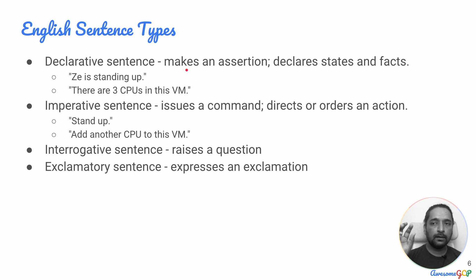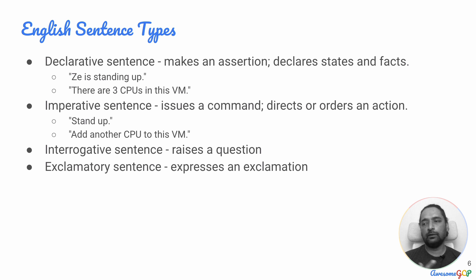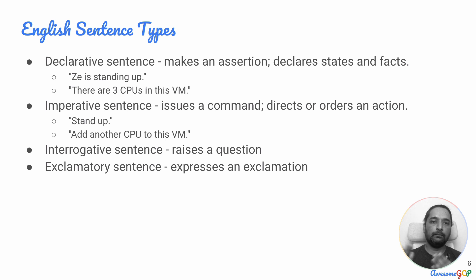For example, you could say 'this person is standing up' — and that would be the state in which that person is. Similarly, when it comes to a virtual machine, you could say 'there are three CPUs in this virtual machine.' At that point in time, there are three CPUs, and that is the current state of the virtual machine.